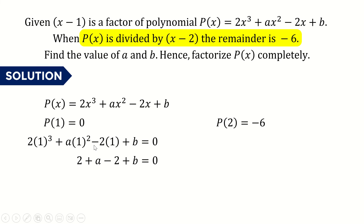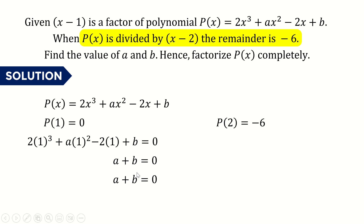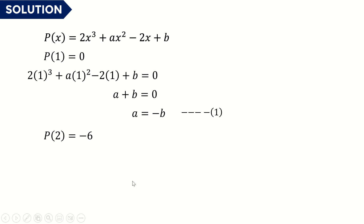Continuing the simplification: 2 times 1 cubed is 2, plus a, minus 2 times 1 which is -2, plus b, equals 0. The 2 and -2 cancel out, leaving a + b = 0. Rearranging gives us our first equation: a = -b.